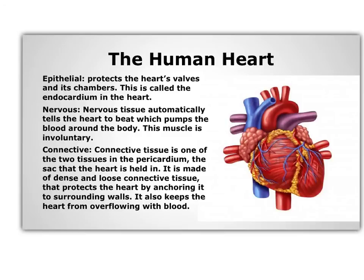The human heart is a great example of an organ that is composed of all four tissue types. We've already talked about cardiac muscle and the role it plays in the human heart, but the other three tissue types are also present. Epithelial tissue helps protect the heart, lining the outside and the inside of the valves, and also protects the heart valves and chambers. On the inside, that layer of epithelial tissue is called the endocardium. Nervous tissue is very important to the heart because it tells the heart when to pump.